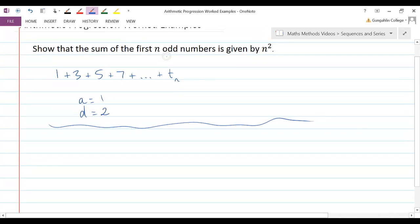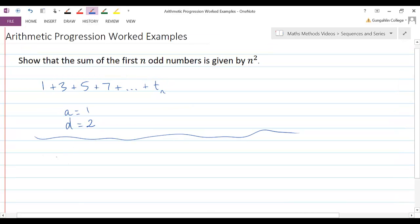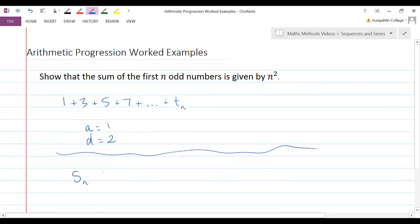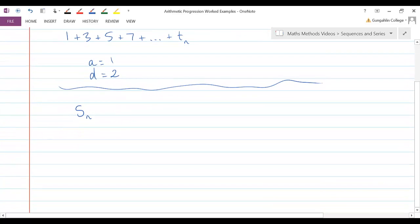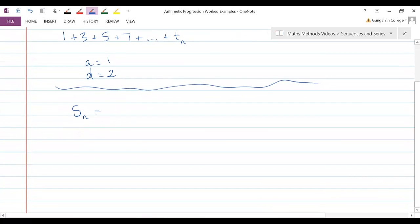Now, the sum of the first n odd numbers. Let's look at our sum to n terms. Oh, my page is jumping all over the place. There we go. Sn equals n lots of a plus l divided by 2. Let's substitute in what we know and then we'll work from there. We know that a is 1.